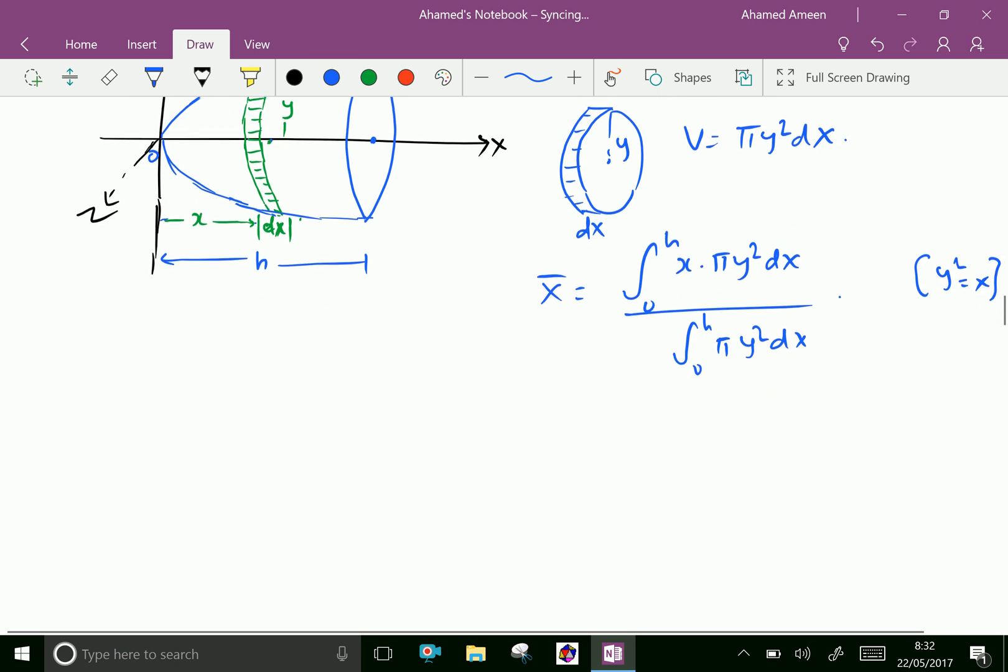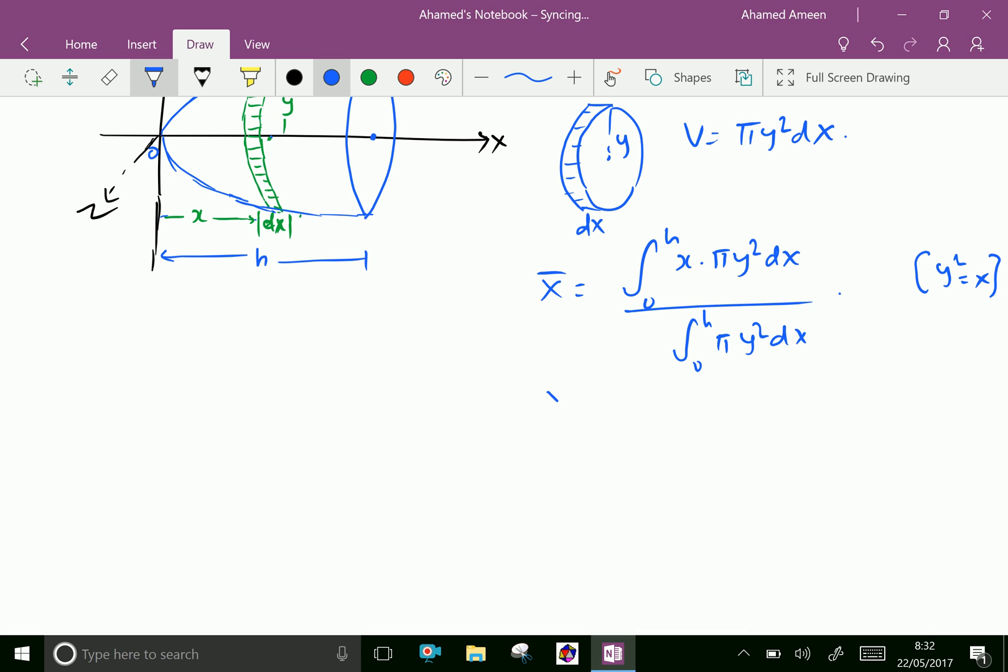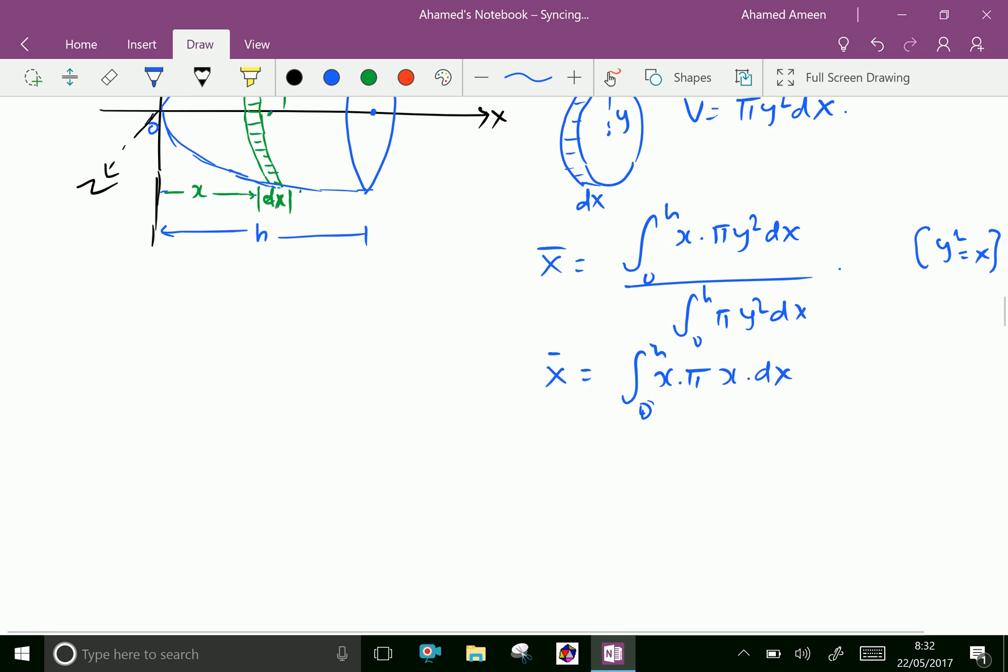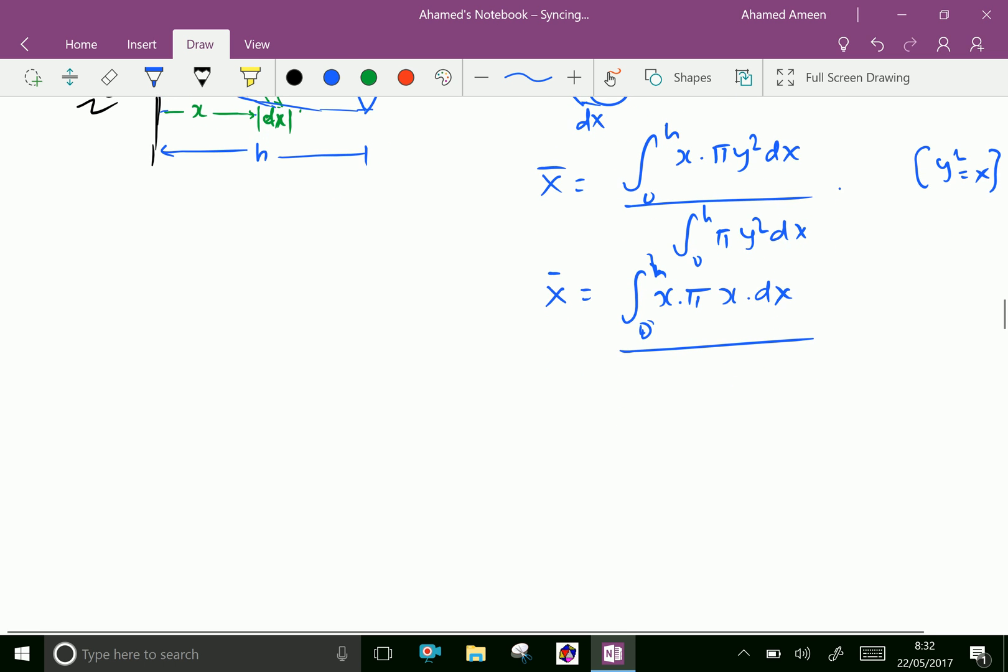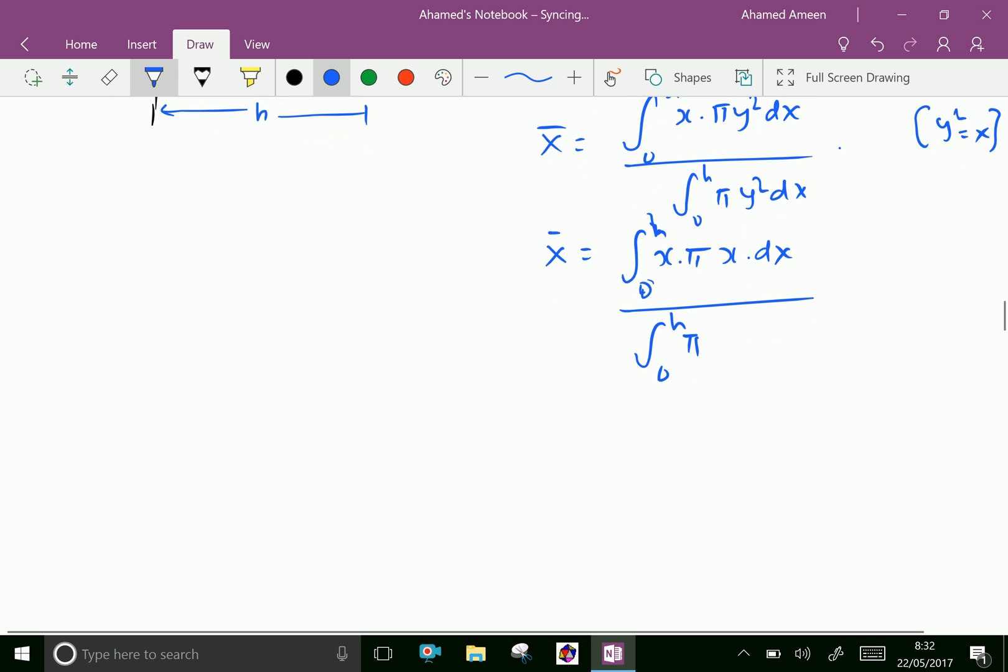Substituting the y² value here, x̄ equals the integral from 0 to h of x times π times x dx divided by the integral from 0 to h of π times x dx.